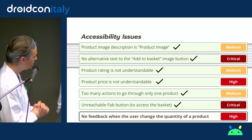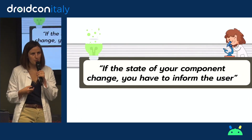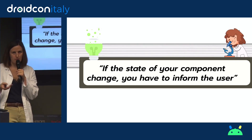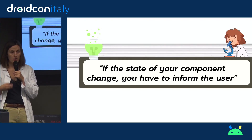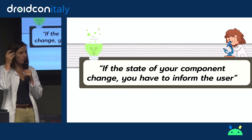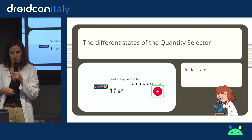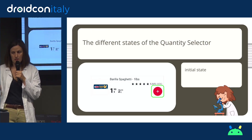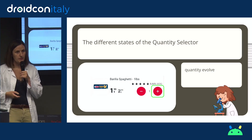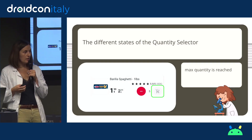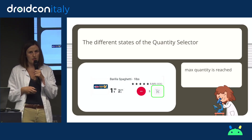There is still no feedback when adding or removing a product quantity — this was the worst problem in the demo. The user was adding products but didn't know how many. What you have to know: if the state of your component changes, you have to inform the user every time. Keep this in mind. Let's look at the states of our quantity selector: initial state, quantity changed (inform user of current quantity), and maximum quantity reached (also inform the user).